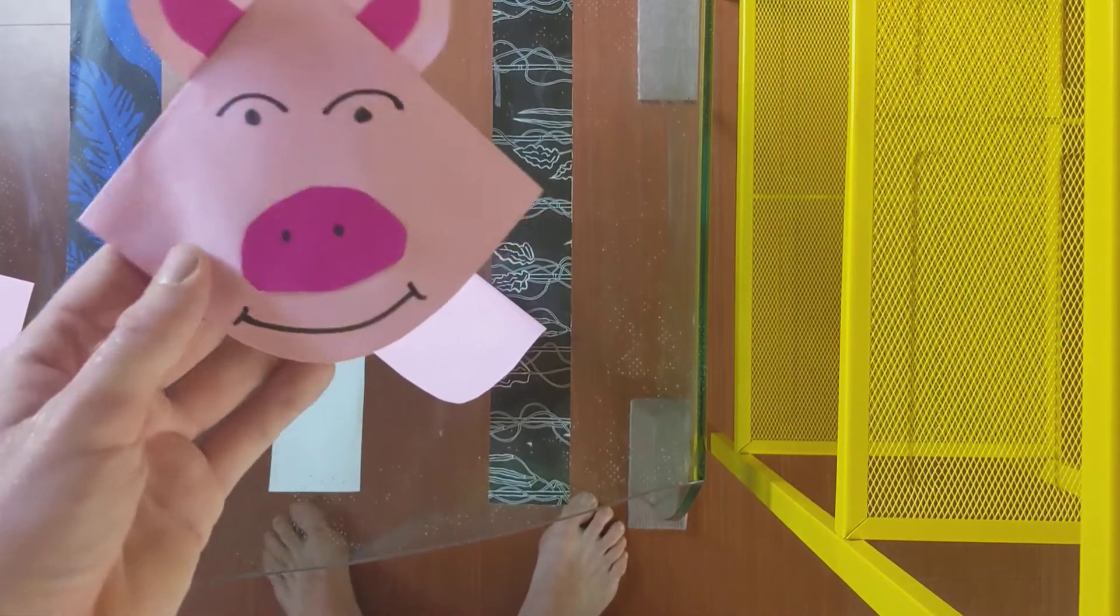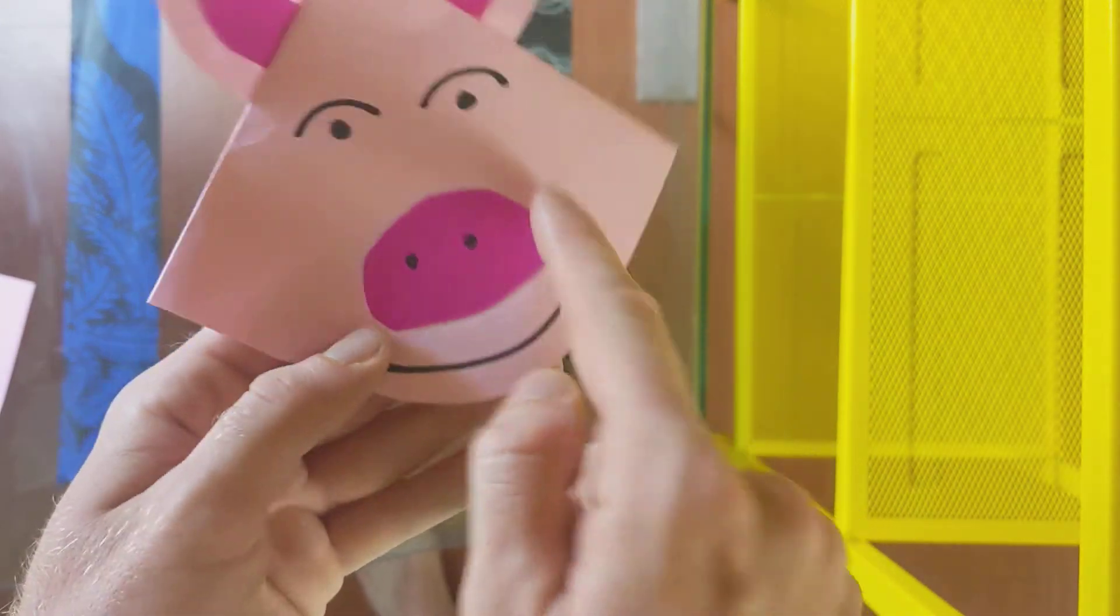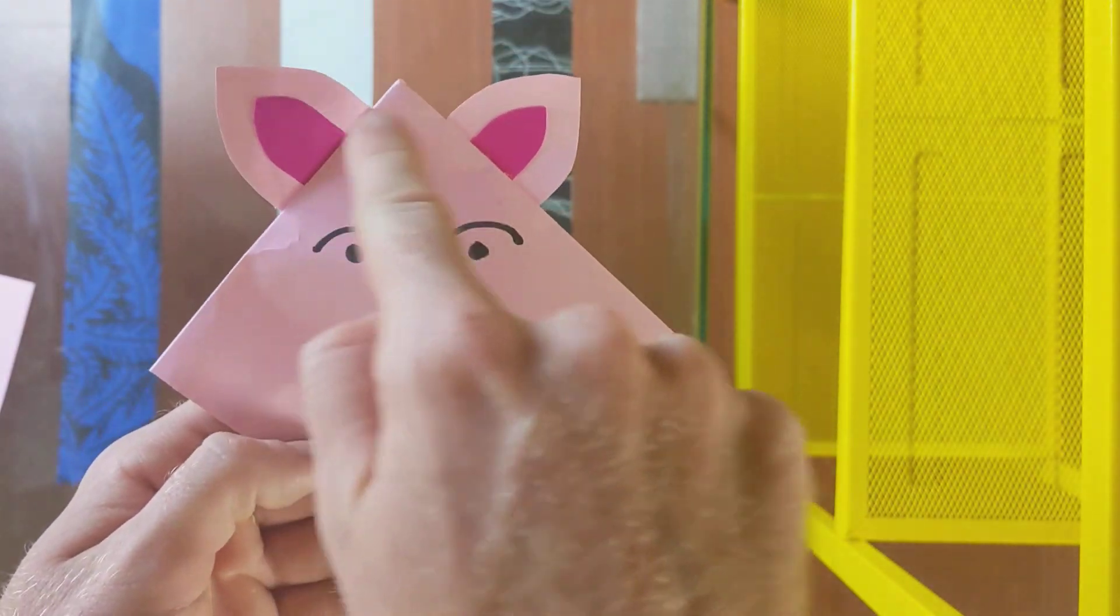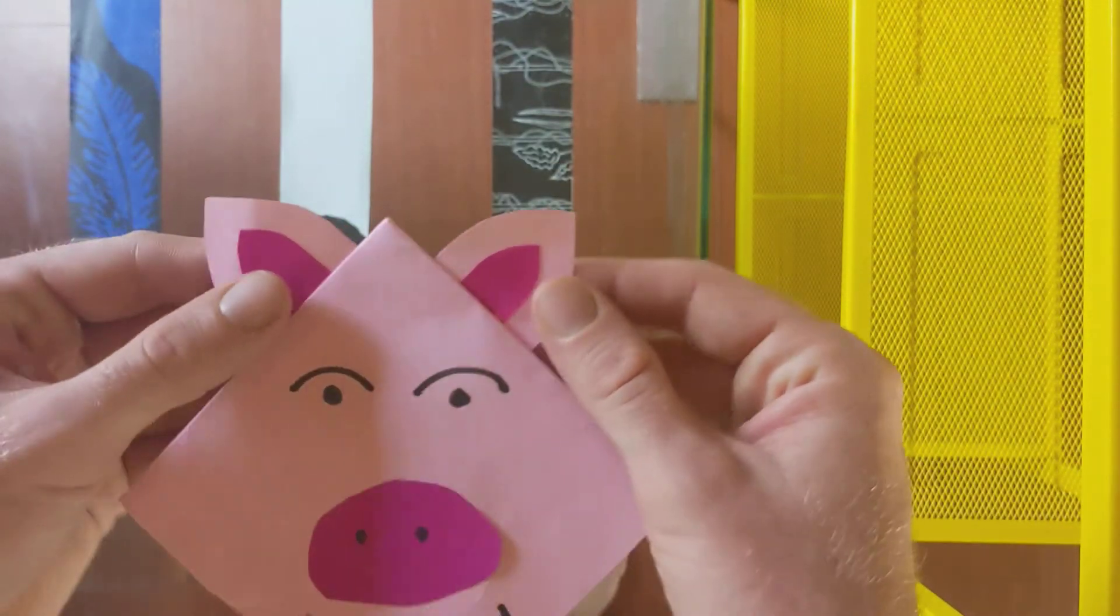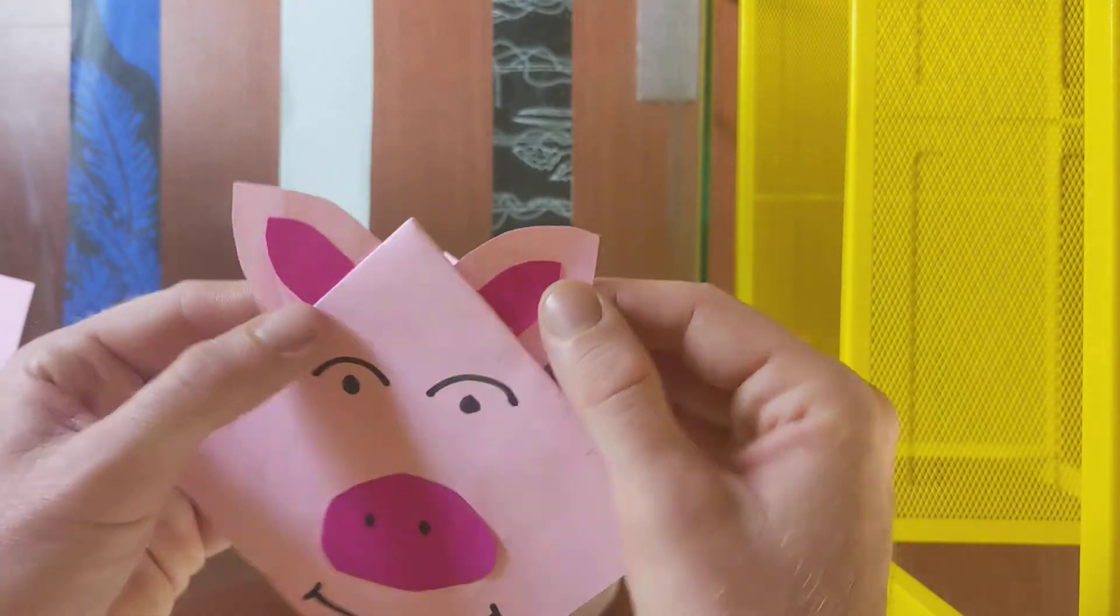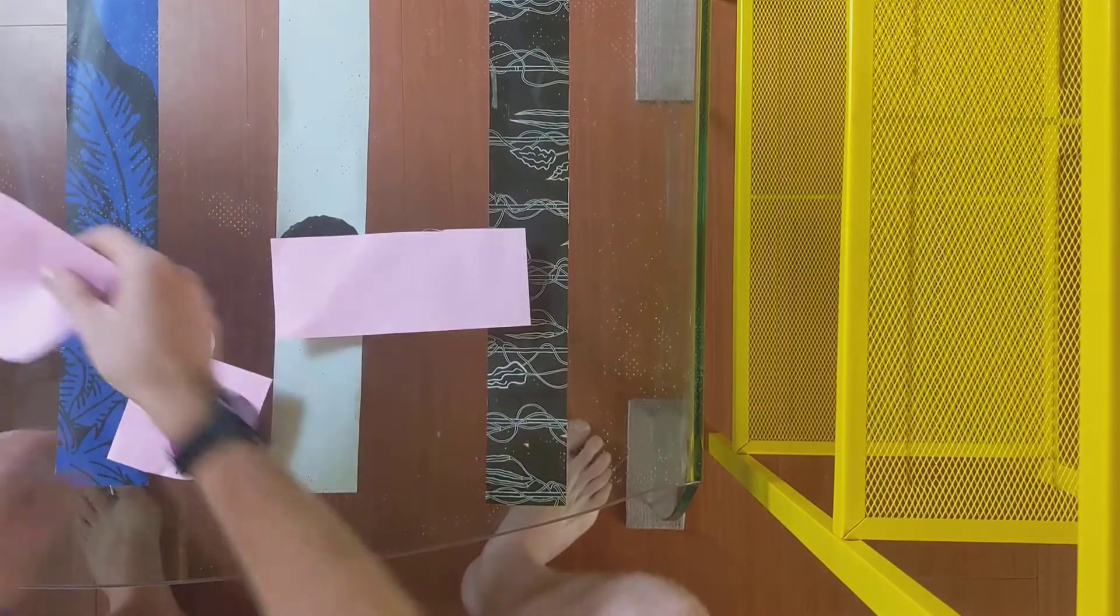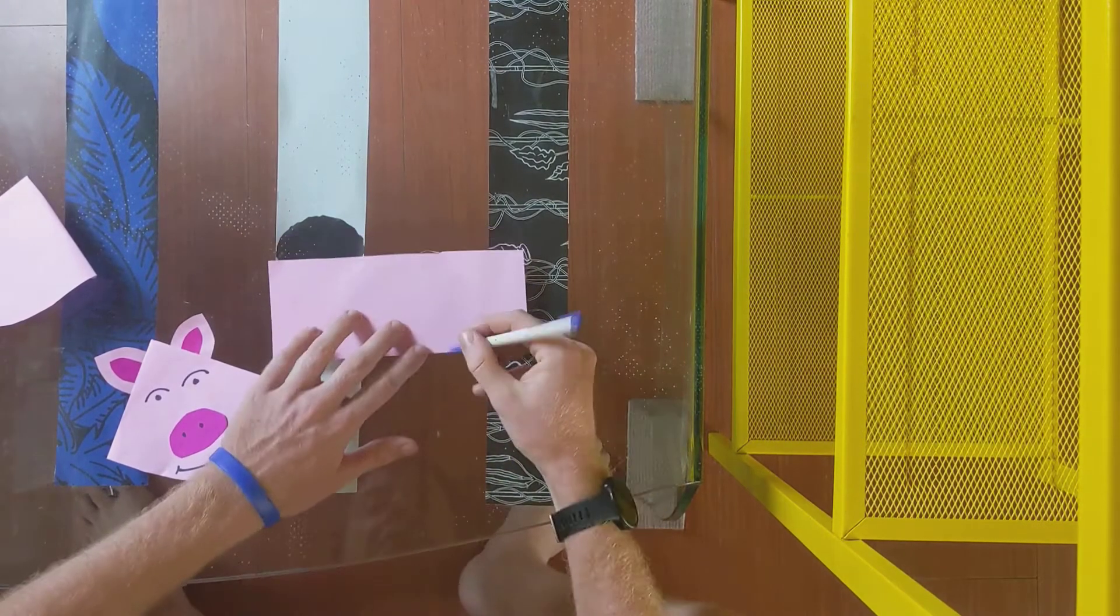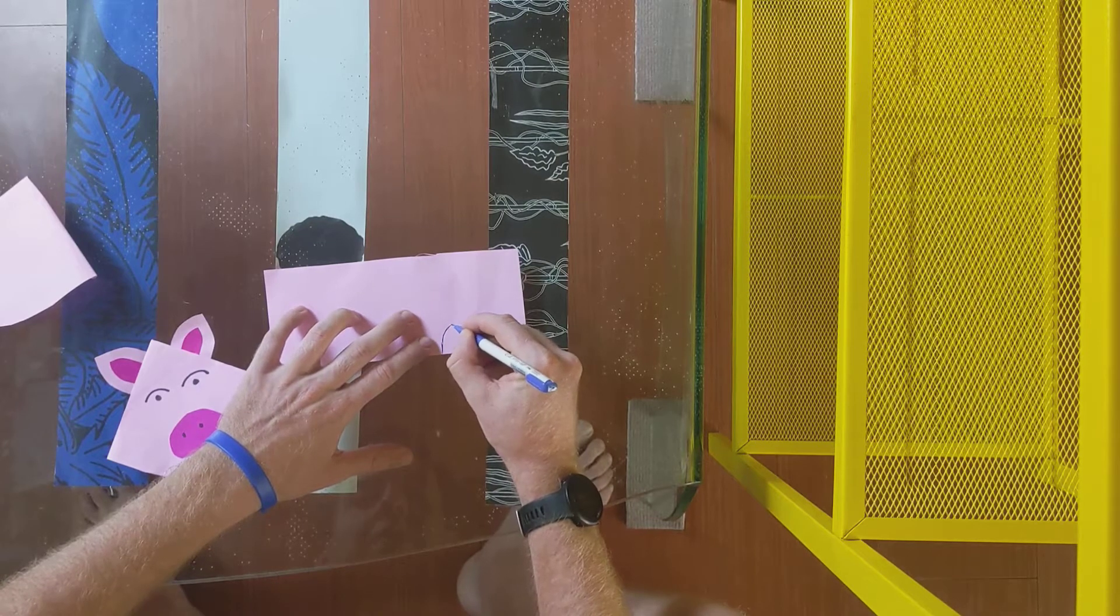So now is the fun part. It is time to make your animal. If you have other paper like this you can cut a nose and ears and glue them down or you can just draw them. So whatever animal you're making you should use a piece of paper like this, an extra piece of paper to cut out some ears. So if you're making a pig maybe your ears will look like this.